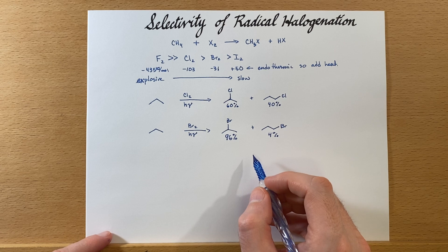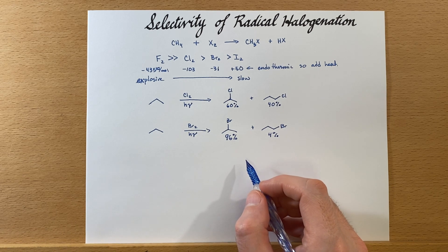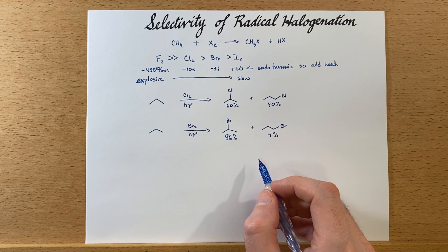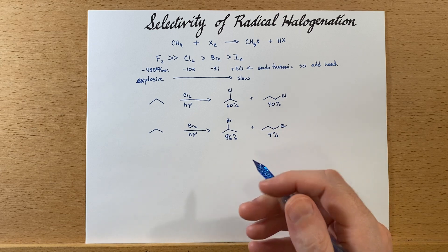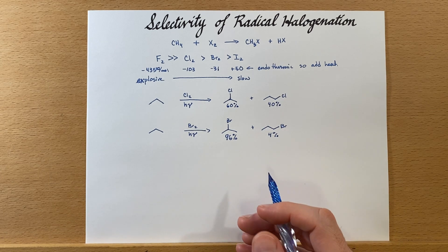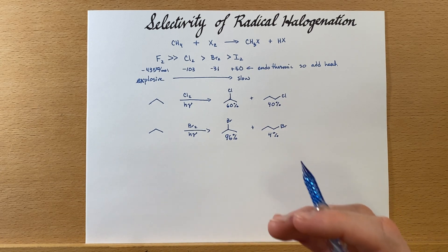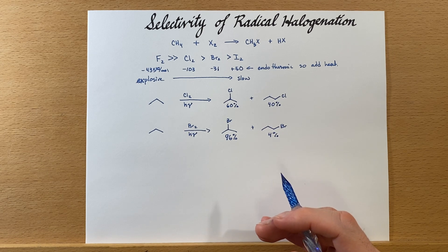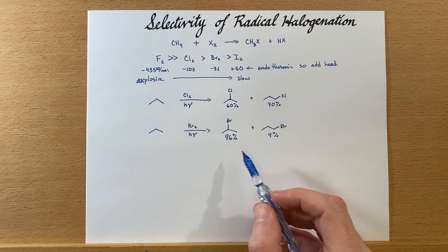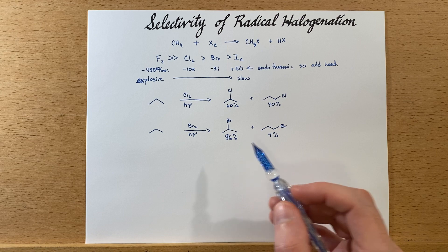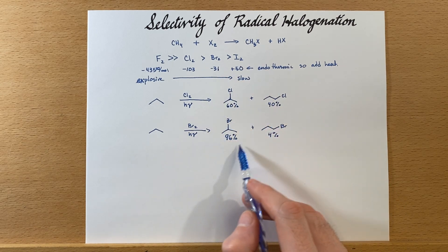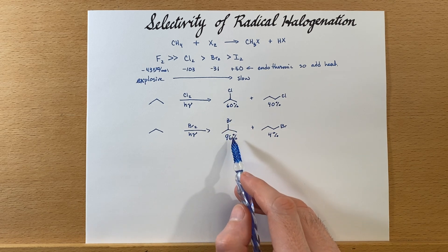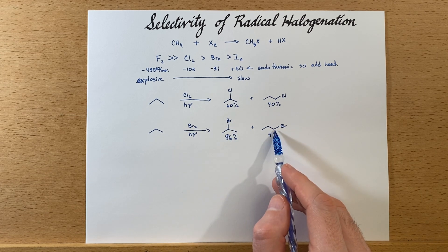Why is that? Well, bromine is a much slower reaction, and so the stability of the radical just comes into play more often. It's much easier to form that secondary radical. Because of that, and because this reaction is slower and less exothermic, we will tend to favor the secondary product over the primary one.